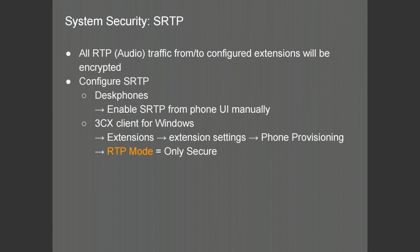The securing of the audio to and from configured extensions will be done at a desk phone manually from the user interface. If you are using a 3CX client for Windows, under the phone provisioning tab of the extension you wish to configure, go to the 3CX client dropdown and choose RTP mode equals only secure.